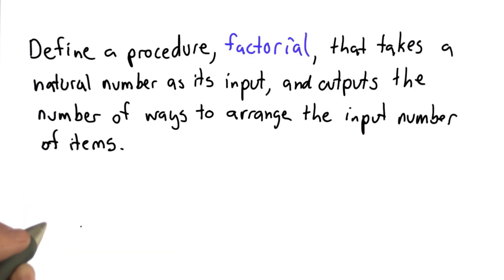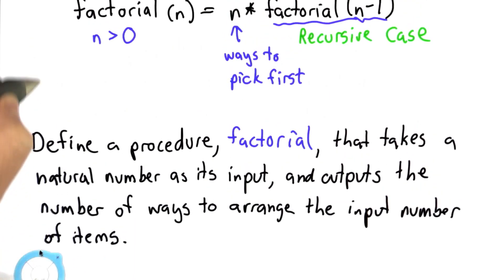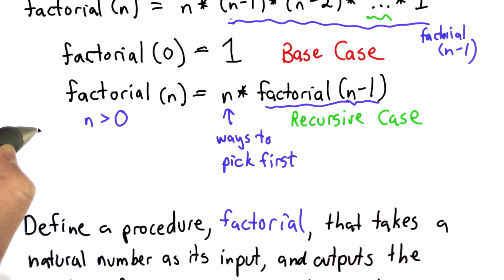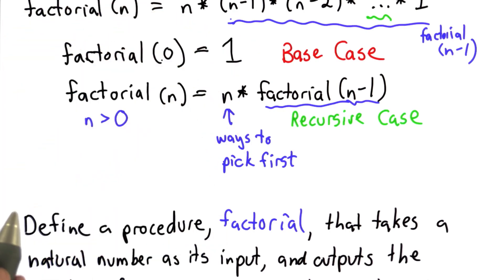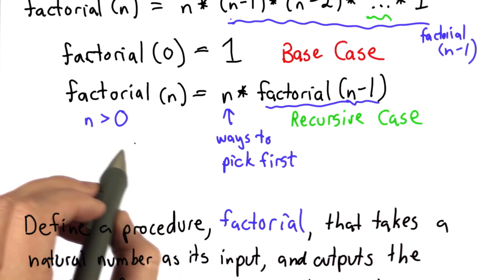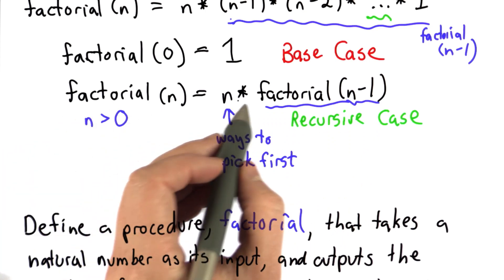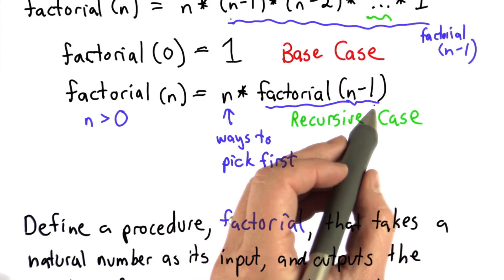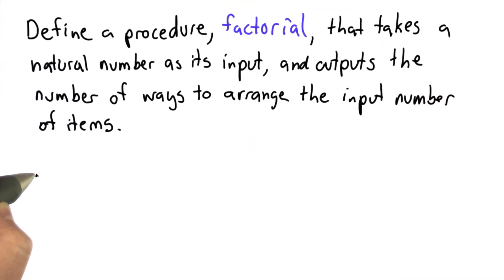Here's how we could define factorial. We should go back to our mathematical definition - that's what we want to turn into code. We had our base case where factorial of 0 results in 1, and we had our recursive case where the input is greater than 0, we want the result to be n times factorial of n minus 1. So we can turn that fairly straightforwardly into code.